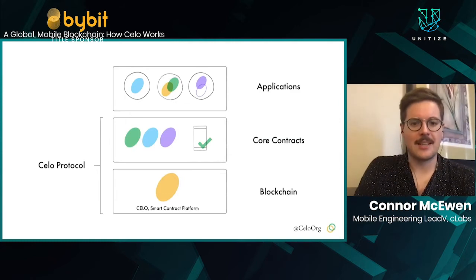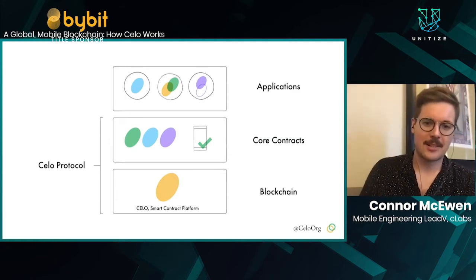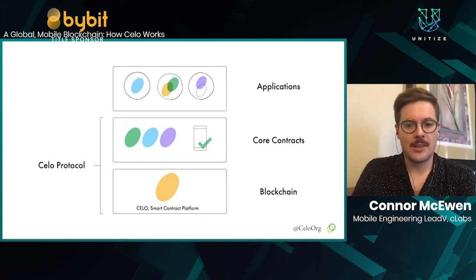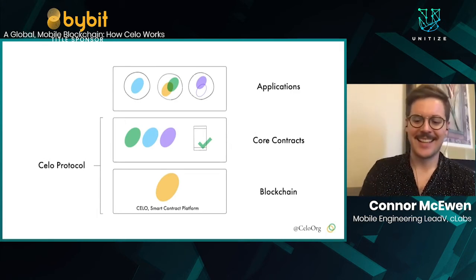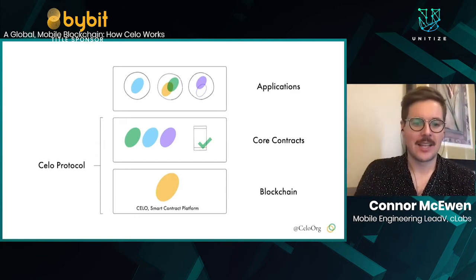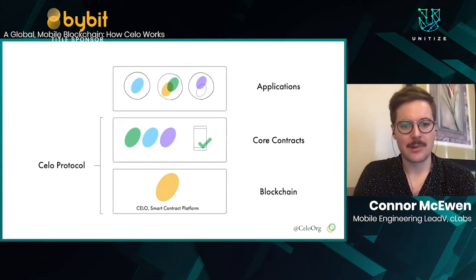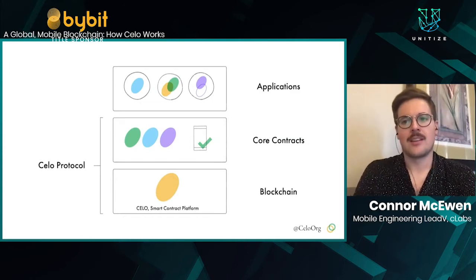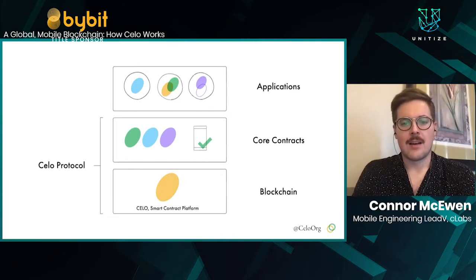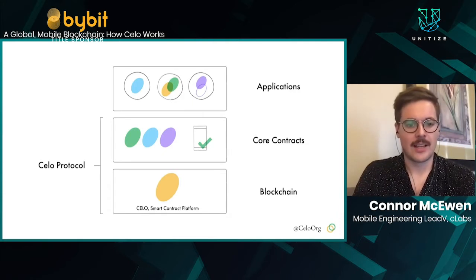So, what is Celo? We want to start with Celo's mission. Our goal is to build a financial system that creates the conditions for prosperity for everyone. That's a very ambitious goal, and so we took a pretty ambitious approach towards reaching that. We've taken a very full-stack approach towards building this project. At the very bottom, we have our own Layer 1 blockchain. This is a fork of Ethereum using the Go Ethereum client, but it is our own blockchain, completely separate, with its own history and network.